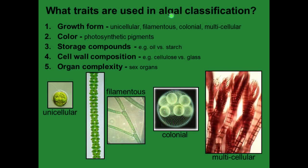What traits are used in algal classification? Number one, growth form: unicellular, filamentous like a hair, colonial like a round ball, or multicellular. Two, their color from photosynthetic pigments — green algae from chlorophyll A or B, brown from phycobillins or other pigments. Three, storage compounds: sometimes oil, sometimes starch, sometimes both. Four, cell wall composition: sometimes cellulose, sometimes glass like our diatoms. Five, organ complexity: sex organs can be unicellular or multicellular.